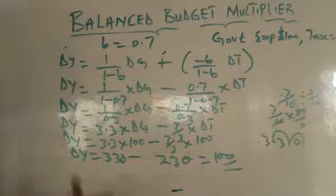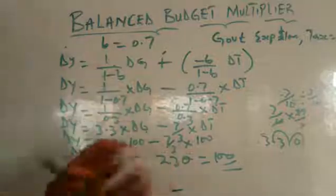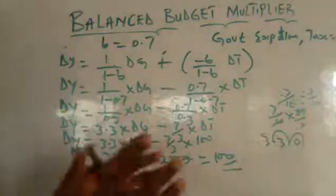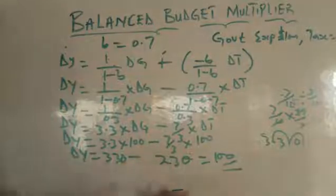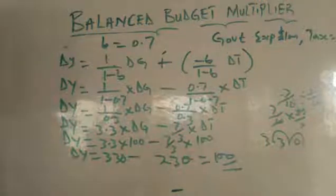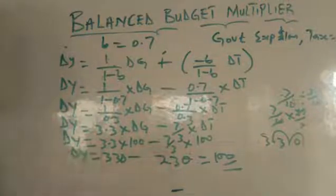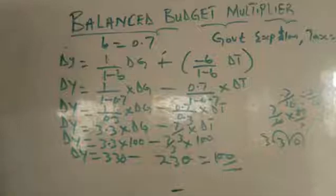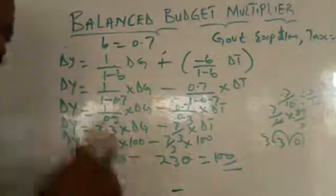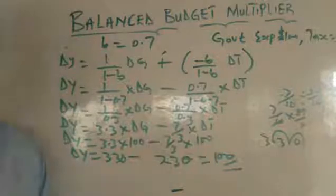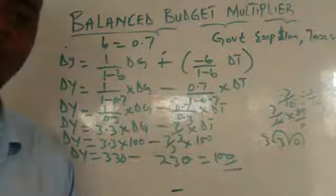In summary, when talking about the balanced budget multiplier, we're talking about a situation whereby government increases tax and also increases government expenditure by the same amount as the tax increase. What is going to happen to national income is that it will increase by the amount injected into the economy. Please subscribe and share our videos.